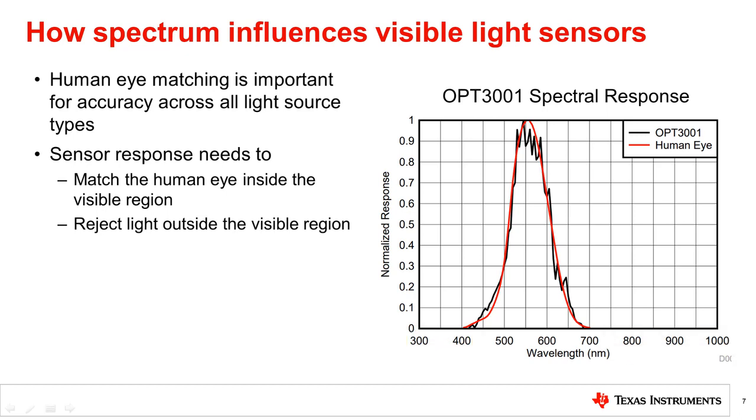Here we show TI's OPT3001 ambient light sensor as an example. You can see that the response closely matches the human eye to maximize accuracy across different light sources.